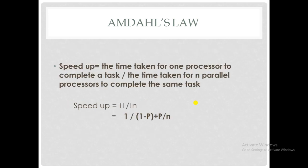According to Amdahl's Law, speedup is the time taken for one processor to complete a task divided by the time taken for n parallel processors to complete the same task. Speedup equals T1 divided by Tn. Substituting the equations for T1 and Tn, we get: Speedup equals 1 divided by (1 minus P plus P divided by n).